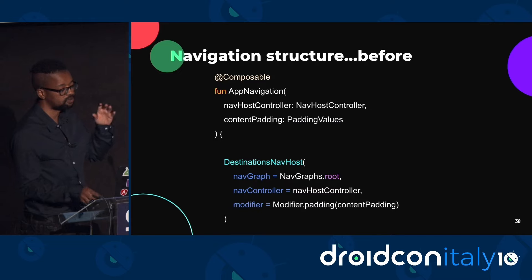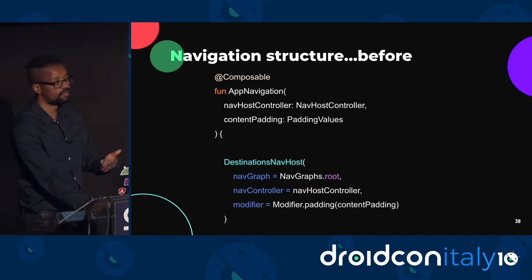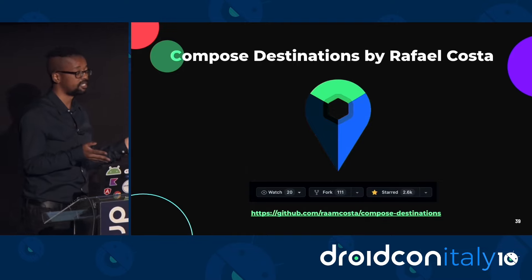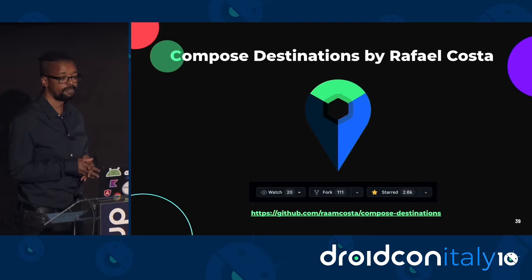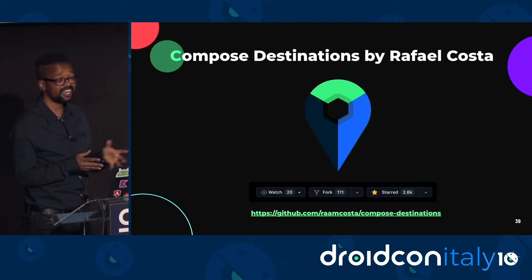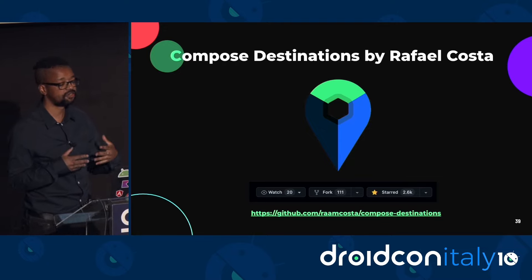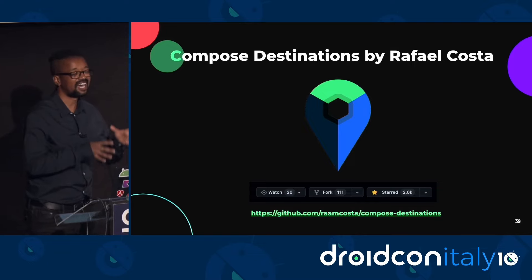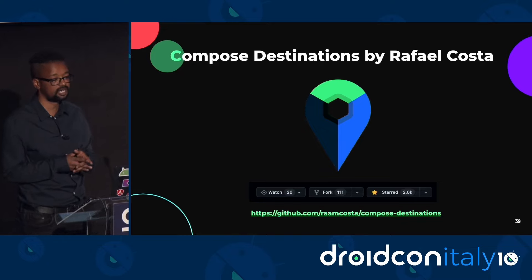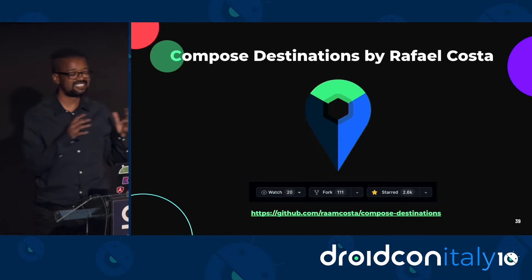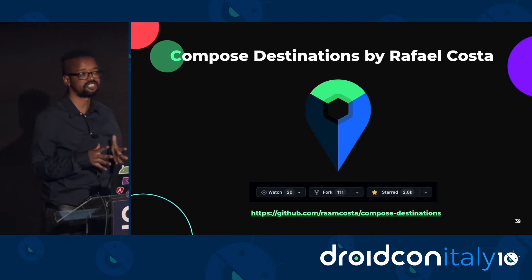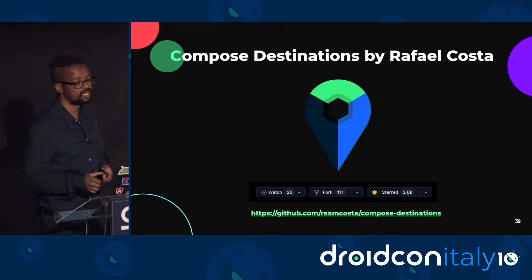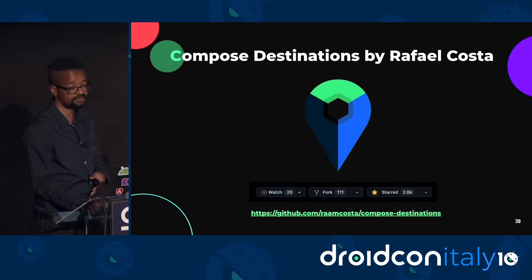Composables annotated with @Destination are automatically added to the navigation graph, and the nav controller specified is what will be used to navigate between destinations. Compose Destinations is a library created by Rafael Costa — a KSP library that processes annotations and generates code using the official Jetpack Compose navigation under the hood. It hides the complex non-type-safe and boilerplate code you would have to write otherwise, making compose navigation easier.